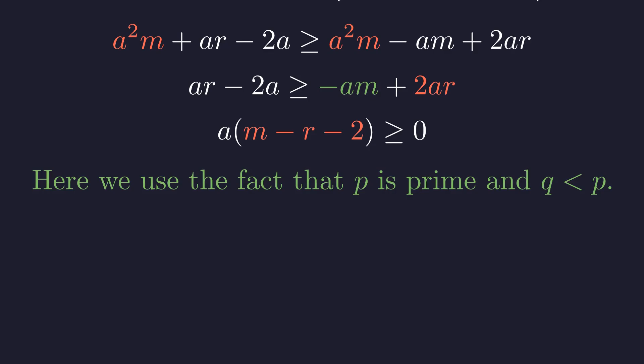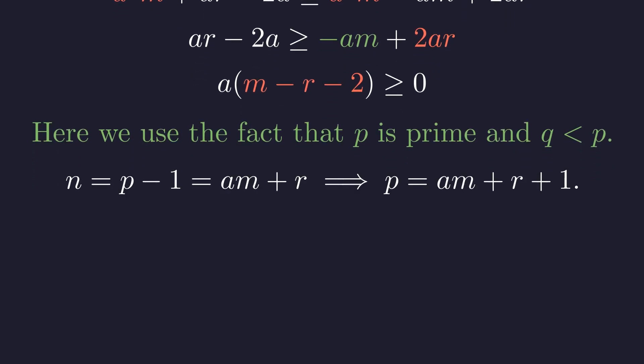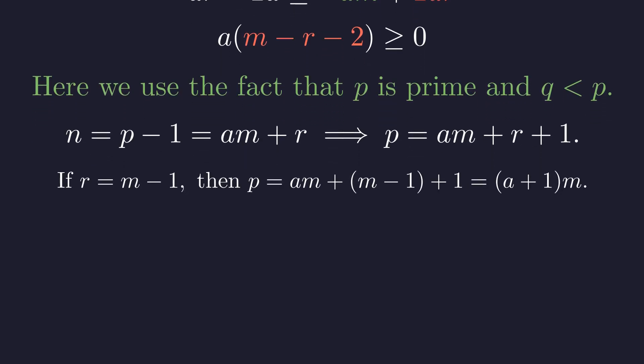But wait—couldn't r be as large as m minus 1? That would make this expression negative. And here's where the magic happens: this is the moment we finally use the fact that p is prime. Up until now, we've just been doing algebra, but primality is about to save the day. Let's think about what we have: since n equals p minus 1, we can write p as a times m plus r plus 1. Now what if r really were m minus 1? Let's see what happens.